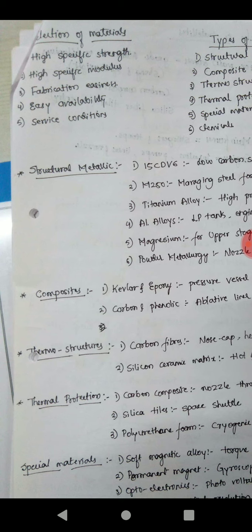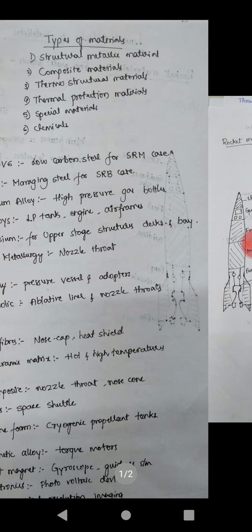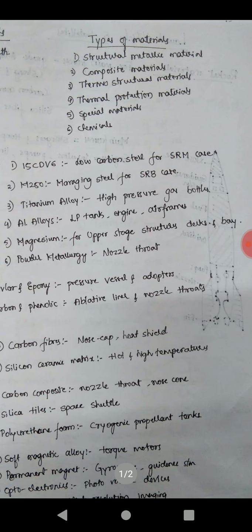Different types of materials include structural metallic materials, composite materials, thermostructural materials, thermal protection materials, and special materials and chemicals. These materials are selected based on the particular applications of launch vehicles and satellites.